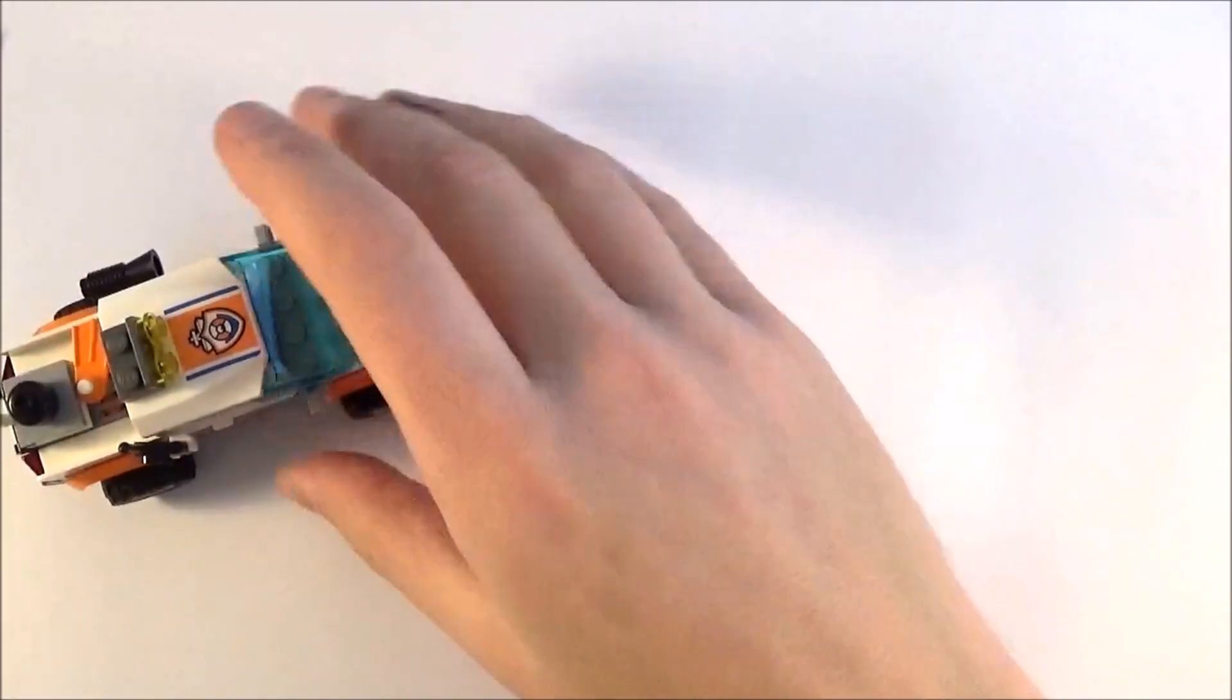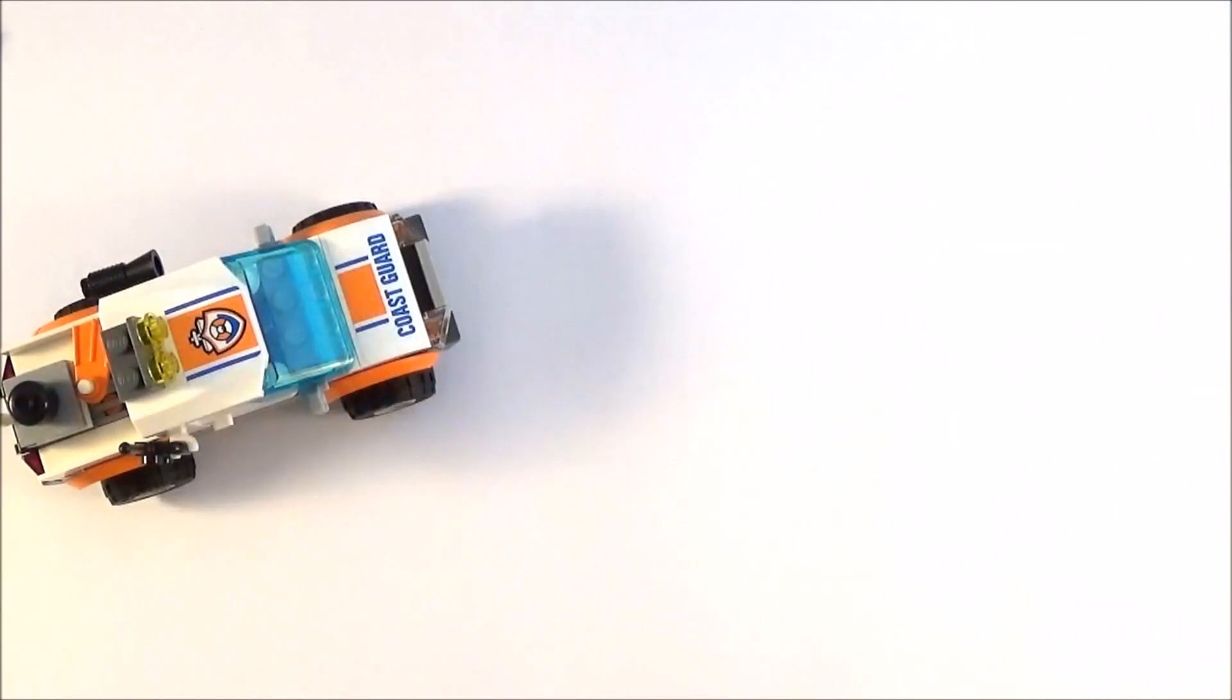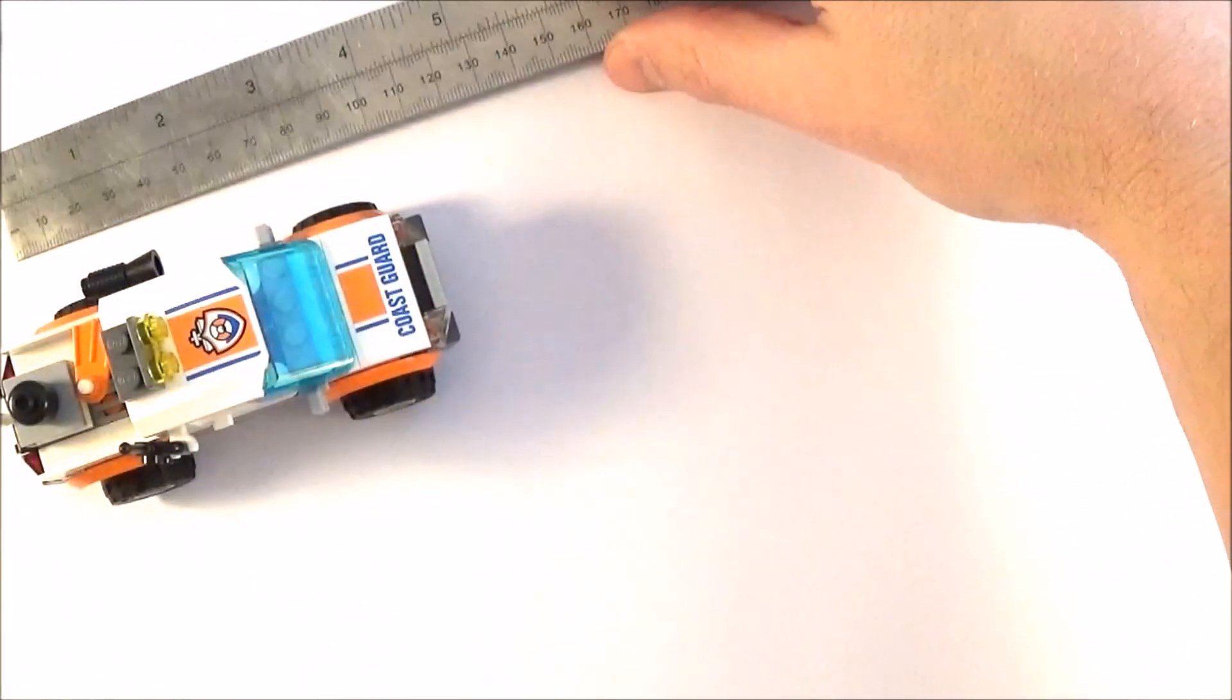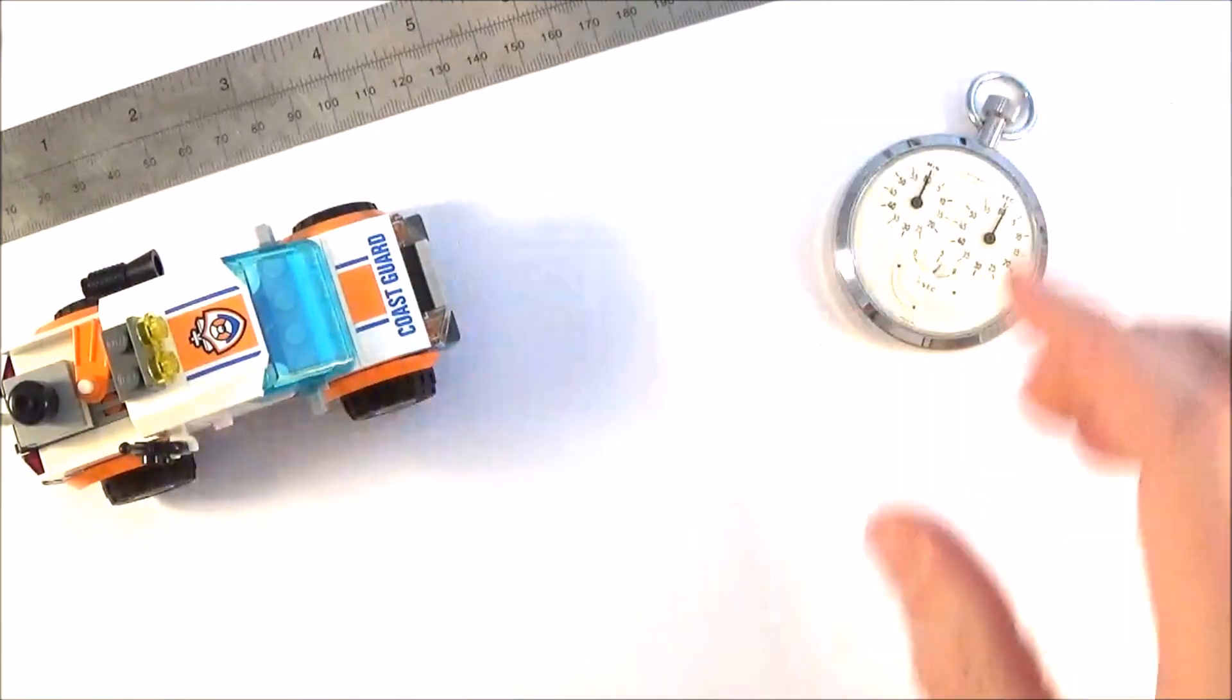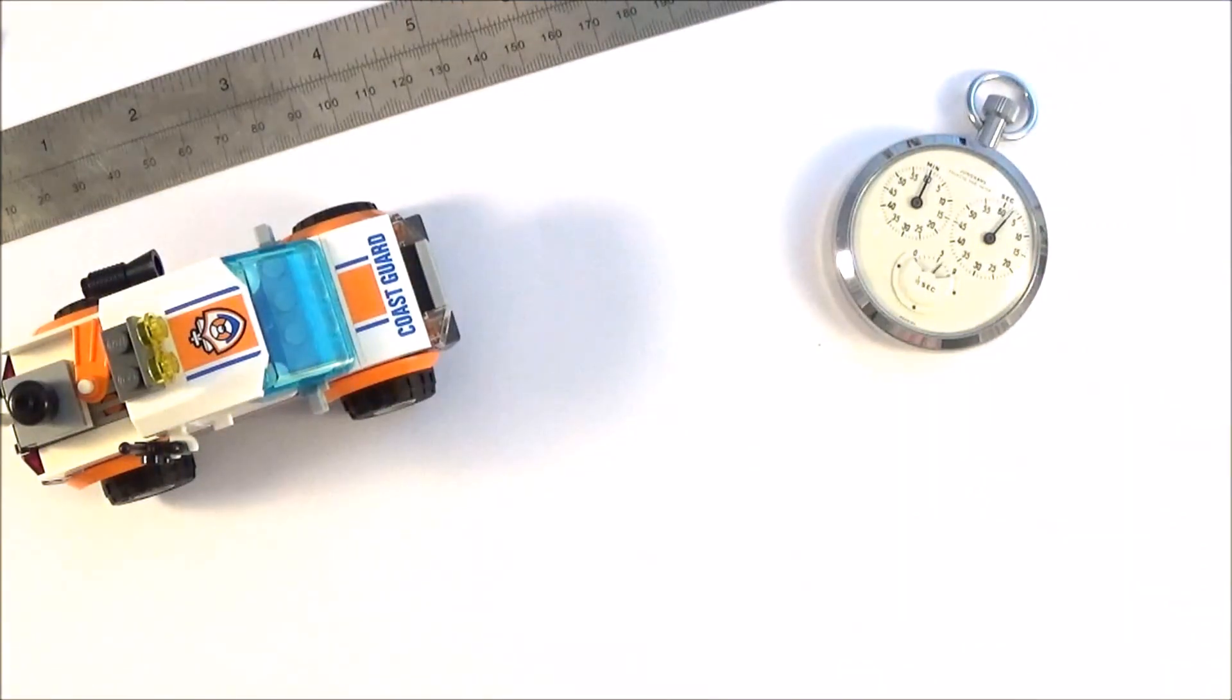To work out the speed of an object, perhaps a vehicle, we need to know two bits of information. We need to know the distance that it's travelled, and we also need to know the time that it's taken to travel that distance.